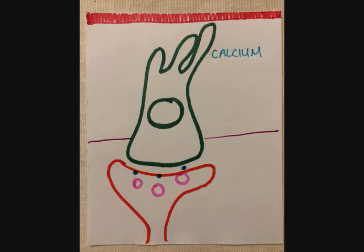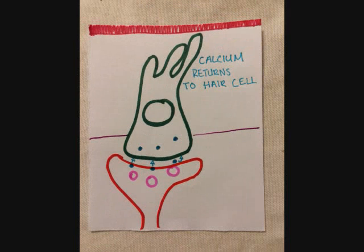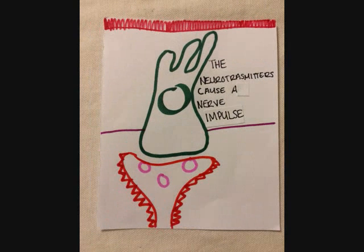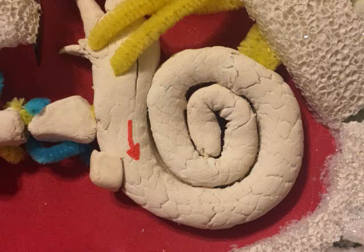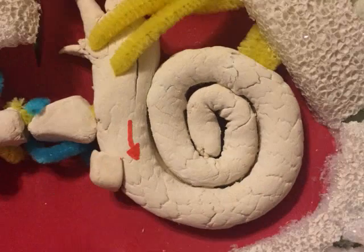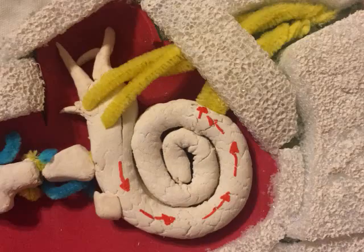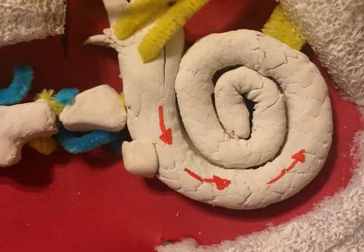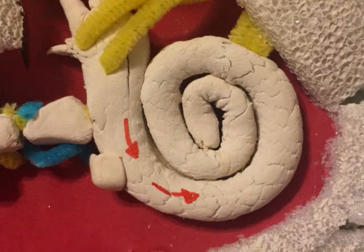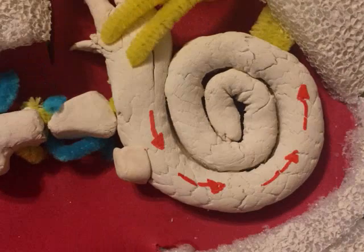After the neurotransmitters exit, calcium then returns to the hair cell. Step 6: The neurotransmitters then cause a nerve impulse in the auditory nerve. Returning to sound transduction of the ear, Step 5: the nerve impulse originating in the basilar membrane travels through the cochlea to the vestibulocochlear nerve. The vestibulocochlear nerve carries the impulse to the brain, where it is analyzed and sound is recognized, completing sound transduction of the ear.